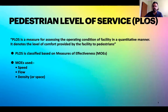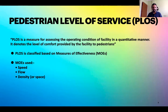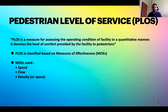Pedestrian Level of Service (PLOS) is a measure for assessing the operating condition of a facility in a quantitative manner. It denotes the level of comfort provided by the facility to pedestrians. PLOS category A is the best — pedestrians can move very freely, cross the road easily, with zebra crossings, signalization, and foot overbridges available. PLOS category F is the worst — pedestrians are unable to move freely, there is no adequate space, and they move in jam conditions. In between we have categories B, C, D, and E.